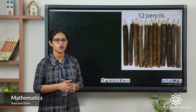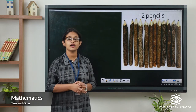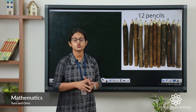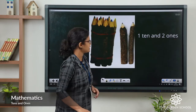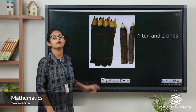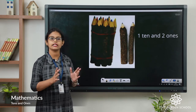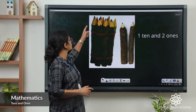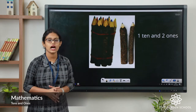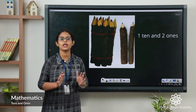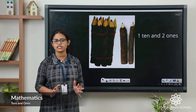Now what we are going to do is we will make a bundle. You know what is a bundle? Bundle means a group. So we will make a group of 10 pencils. I have made a bundle of 10 pencils. So in one bundle how many pencils are there? 10. You can count it: 1, 2, 3, 4, 5, 6, 7, 8, 9, 10. So there are 10 pencils in one bundle. Bundle means group. In one group, 10 pencils.